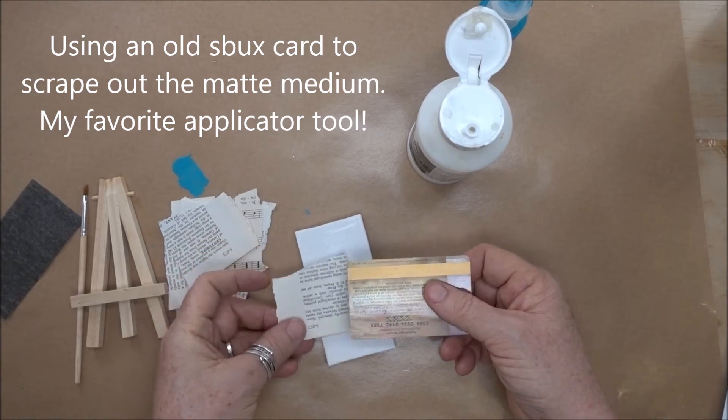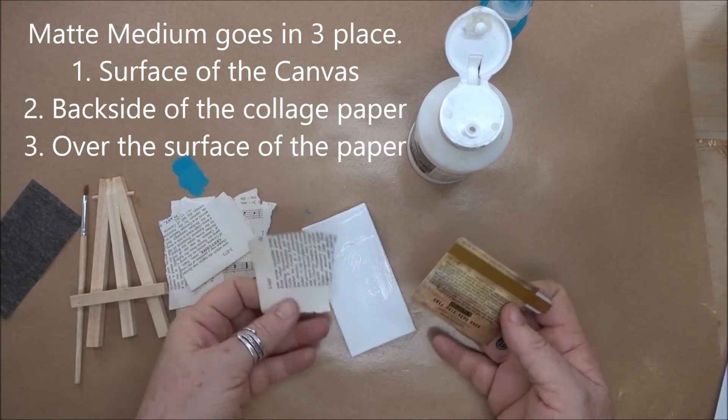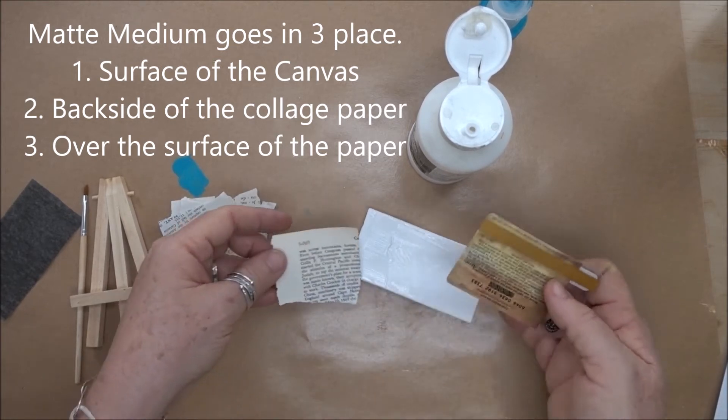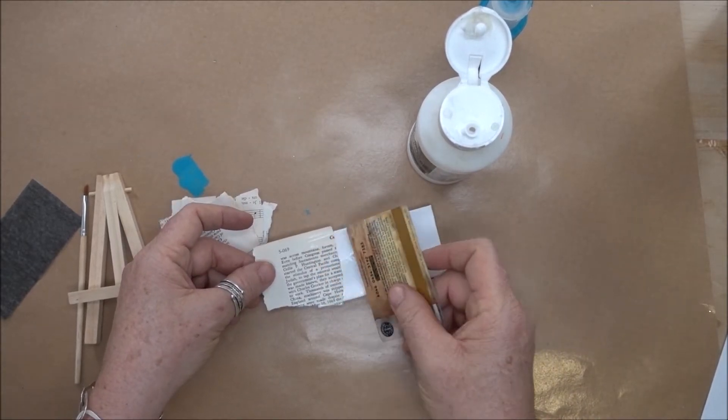I also want to put some of this matte medium on the back side of the paper and then I'm going to put wet sides together. Place it, position it so that the back side is down and then scrape it into place.